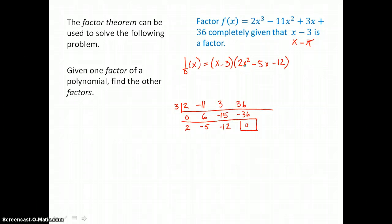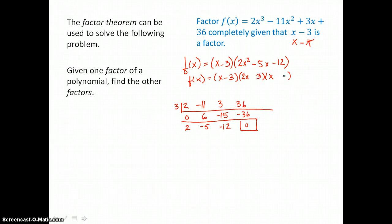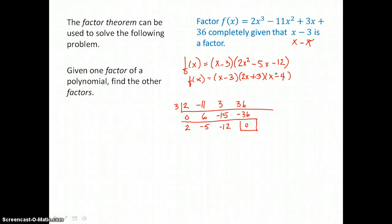We want to factor completely, and this trinomial is of the second degree. We need to factor it into a binomial times a binomial. I'll factor 2x squared into 2x times x, and factor negative 12 into 3 times 4. Making 8x negative and 3x positive gives negative 5x in the middle, and positive 3 times negative 4 is negative 12. So the polynomial is completely factored into 3 linear factors.